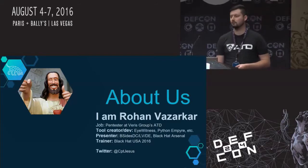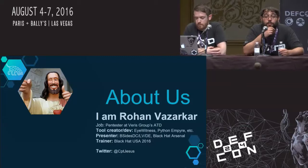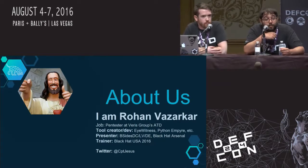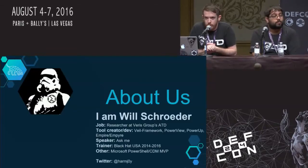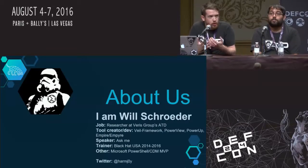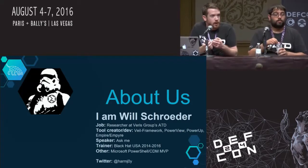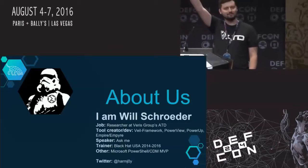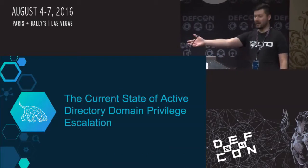I'm Rohan Veserker, another penetration tester at Varus Group. I've been doing penetration testing for about two and a half years. I work on a lot of open source projects and was responsible for the web UI for this one. My name is Will Schroeder, my handle is Harmjoy. I'm a researcher at the adaptive threat division, and I've built a good number of our offensive tool sets, most notably PowerShell Empire and PowerView, which acts as the data collection component for Bloodhound.